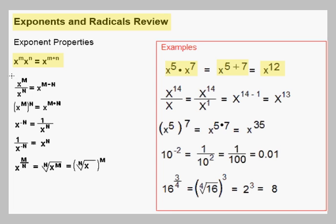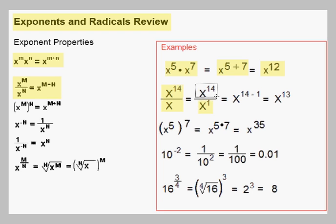We have another property called the quotient rule for exponents. When we have x to the m divided by x to the n, we subtract exponents and we get x to the m minus n. Here's an example: x to the fourteenth divided by x. You have to realize that x is x to the first, so we have x to the fourteenth divided by x to the first. We subtract exponents and get x to the fourteen minus one, or x to the thirteenth.